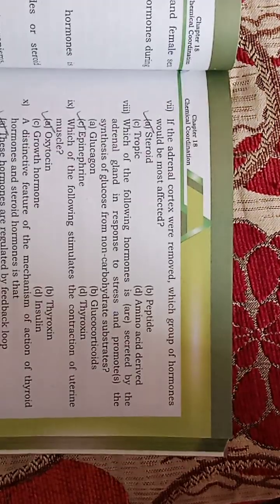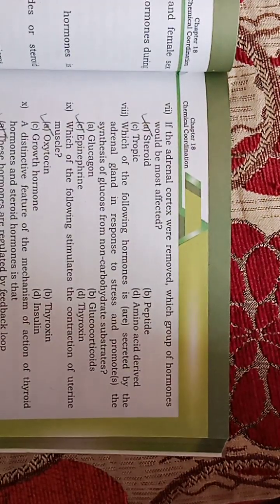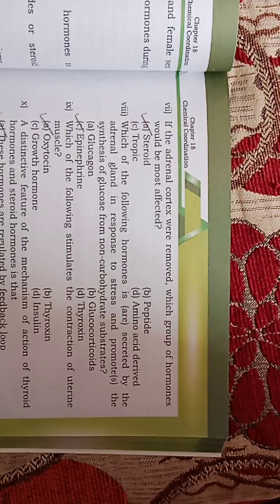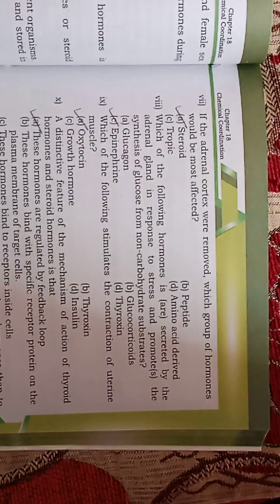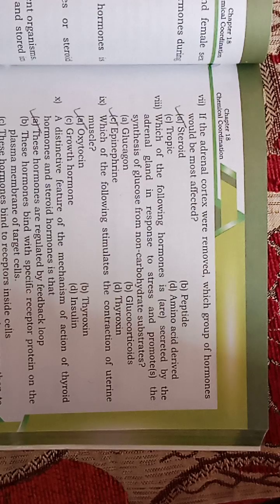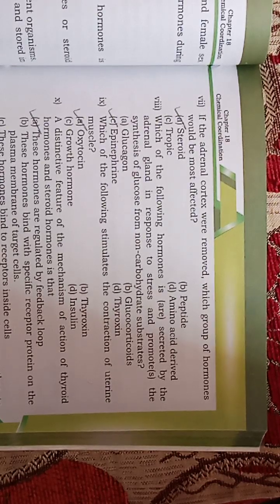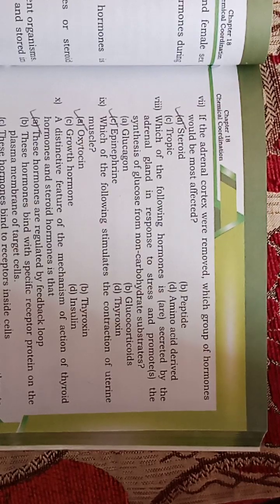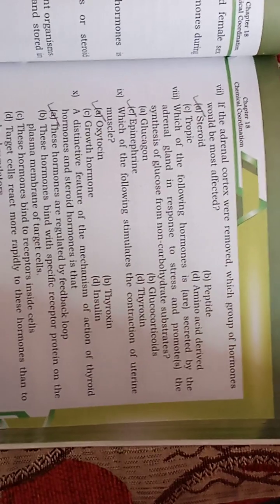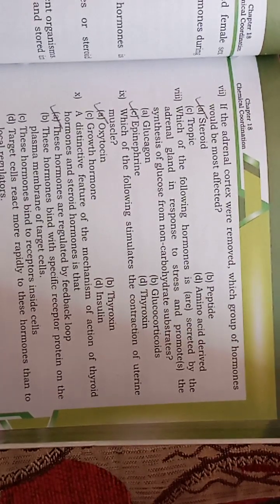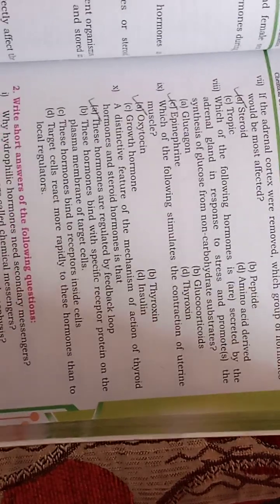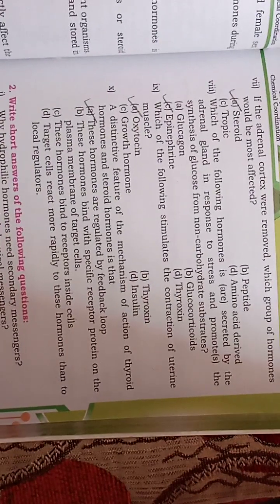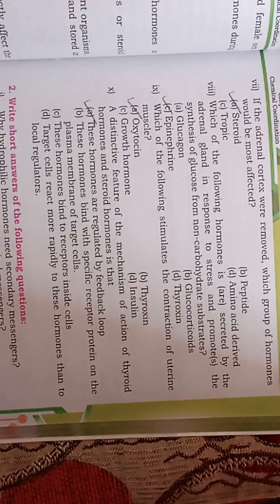Which of the following stimulates the contraction of uterine muscles? That is oxytocin. The distinctive feature of the mechanism of action of thyroid hormones and steroid hormones is that — option A — these hormones are regulated by a feedback loop.